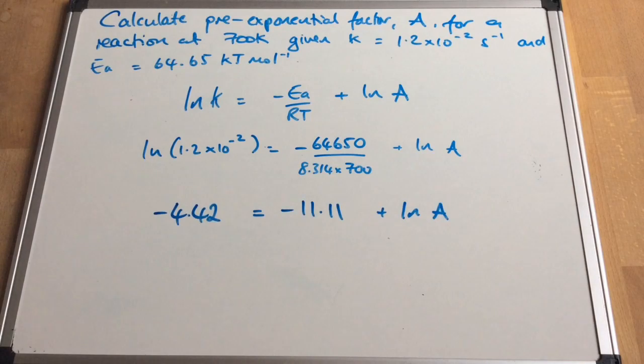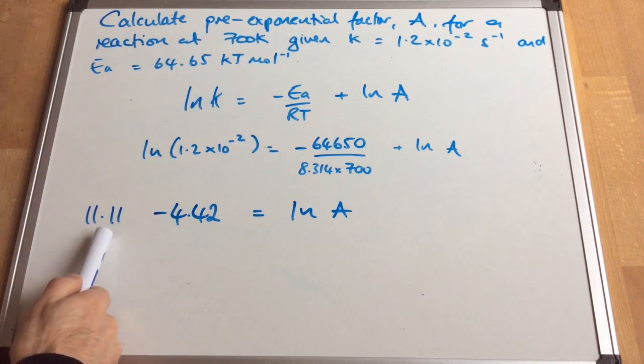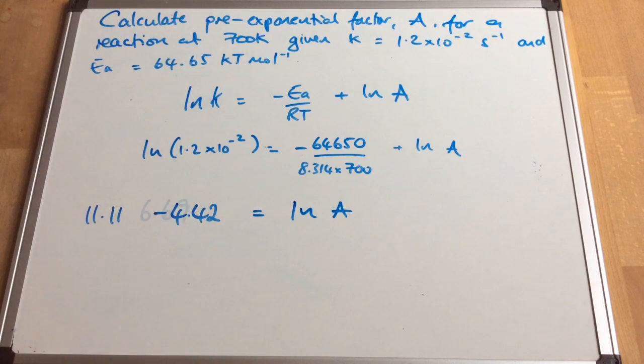So that's giving me those numbers there for the next line. Taking the minus 11.11 over the other side gives us this, which gives me a ln A value for the pre-exponential factor of 6.69. So we need to turn this into A.